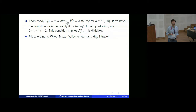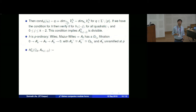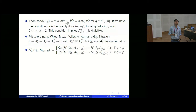We first prove the result for the Greenberg Selmer group or the signed (sine) Selmer group, and then compare the Bloch-Kato Selmer group with those. If H is p-ordinary, then by Wiles and Mazur-Wiles, H has a G_{Q_p}-filtration where the modules are co-free O-modules and the quotient is unramified at p. Using this, one defines the Greenberg Selmer group condition.